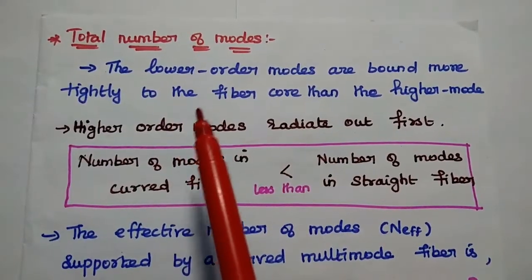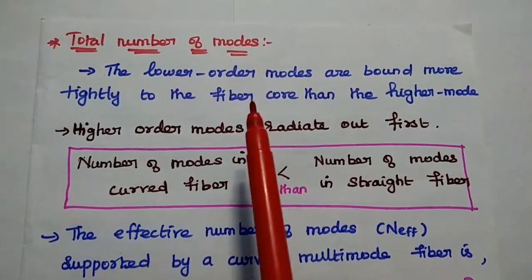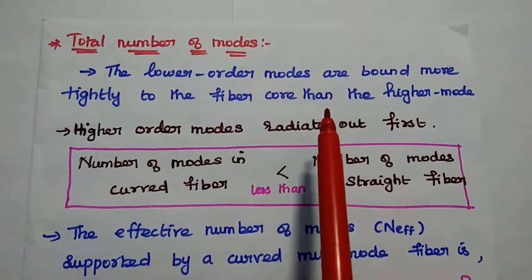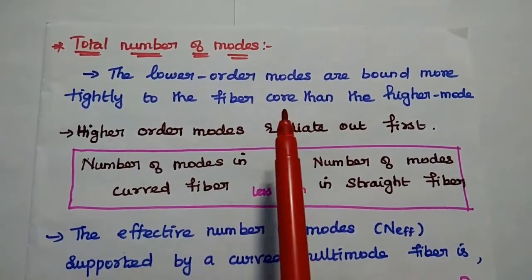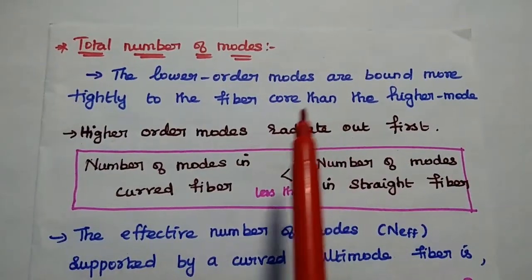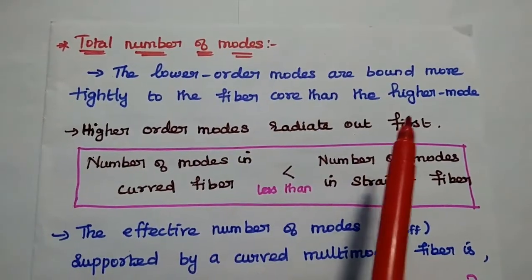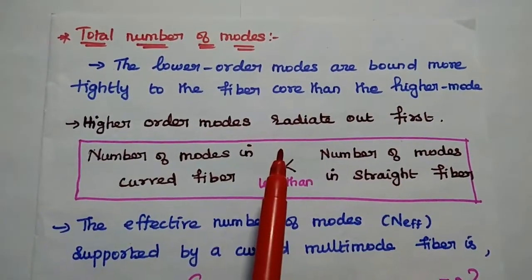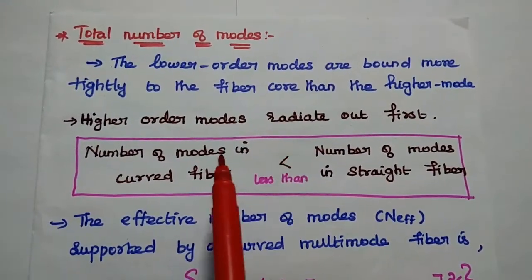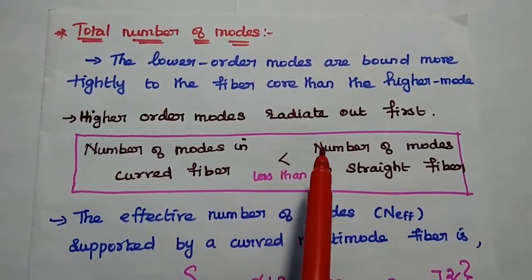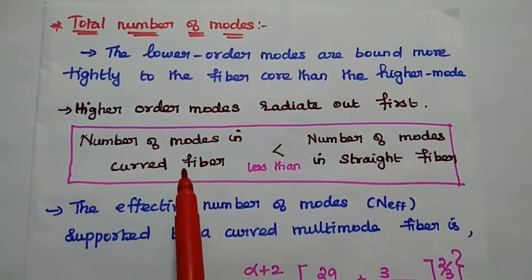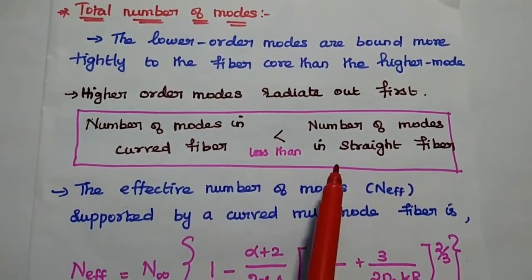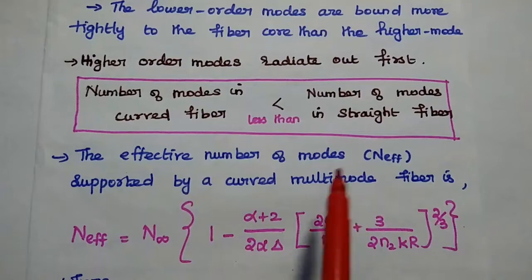Next, we are going to find out the total number of modes propagating under the macroscopic bending loss. Here, the lower order modes are more tightly bound to the fiber core than the higher order mode. That means, higher order modes are loosely bound with the fiber core. It can be easily radiated first. Then, the number of modes in curved fiber is always less than the number of modes in straight fiber.